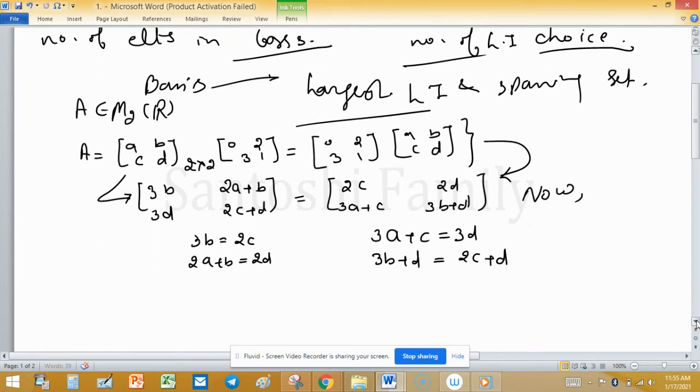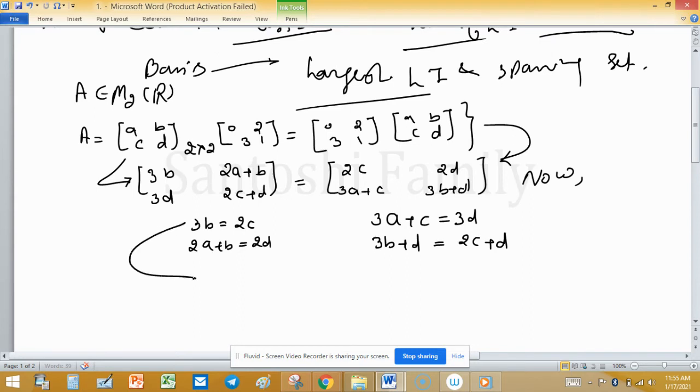Now solve these equations. From this equation, b = (2/3)c. And use this equation 2a + b = 2d. Substituting the value of b, we know 2a + (2/3)c = 2d. Now this equation has a, c, and d. Use this equation: 3a + c = 3d.